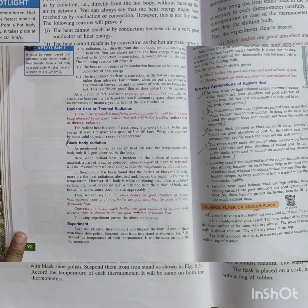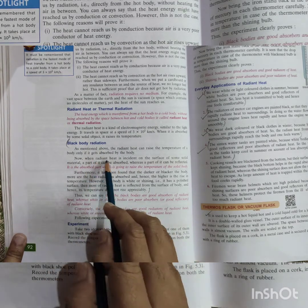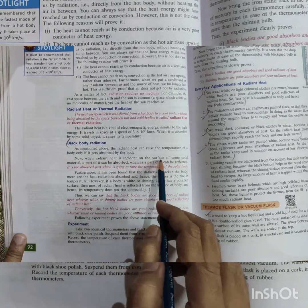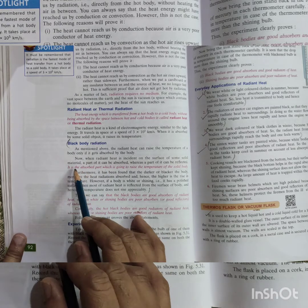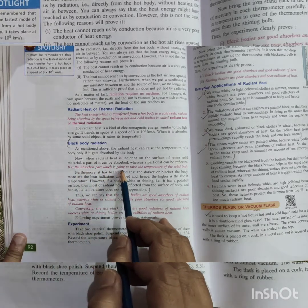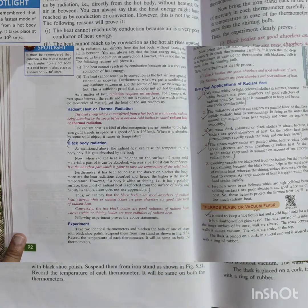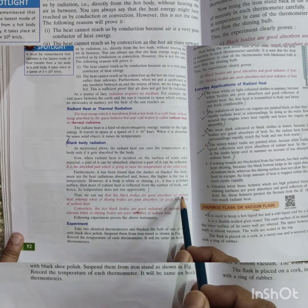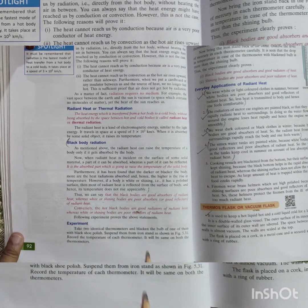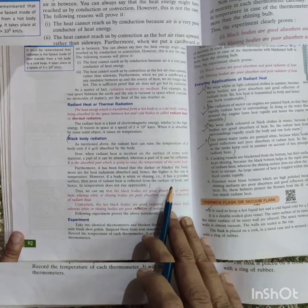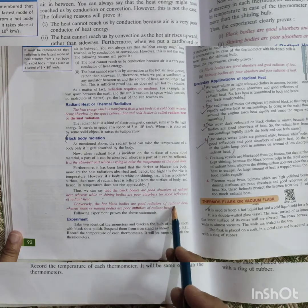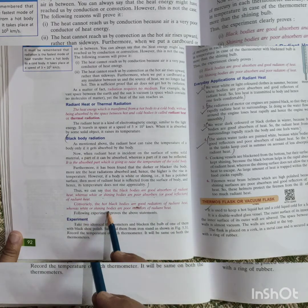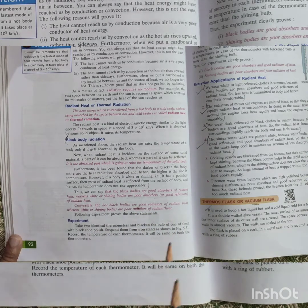Now, black body radiation. What is black body radiation? When radiant heat is incident on the surface of some solid materials, a part of it can be absorbed, whereas a part of it can be reflected. In black bodies, the absorbed part is going to raise the temperature of the solid body. So we can say that black bodies are good absorbers of radiant heat, whereas white and shiny bodies are poor absorbers. Conversely, hot bodies are good radiators of radiant heat, whereas white or shiny bodies are poor radiators of radiant heat.